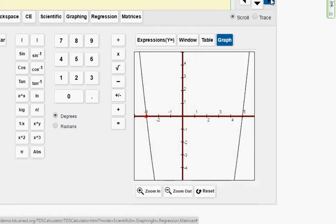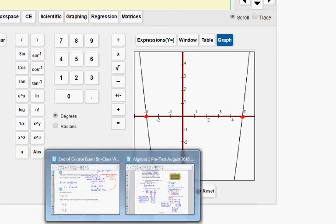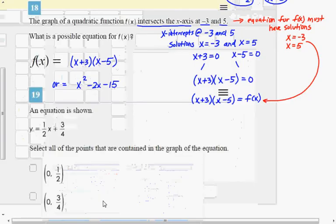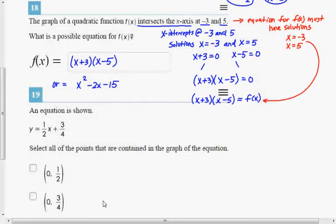Intercepts at negative 3 on the x-axis and positive 5. So that is a higher level thinking question for sure. But the idea is that this test is assessing whether you have made the connection that the x-intercepts of the graph are the solutions to the equation. The solutions will show up as the x-intercepts.